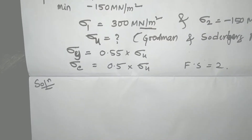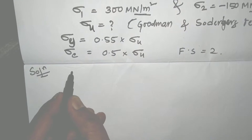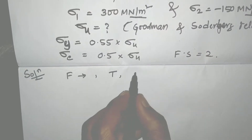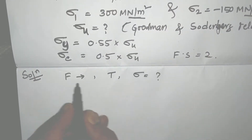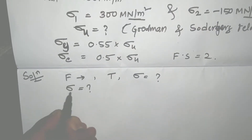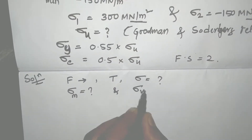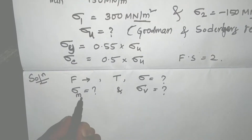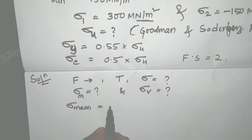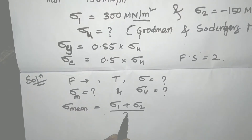In fluctuating stress problems the loads, torque, or stresses may be fluctuating. We need to calculate Sigma_M and Sigma_V for use in the Goodman and Soderberg equations. Sigma_M is the mean stress, which is equal to Sigma_1 plus Sigma_2 divided by 2.